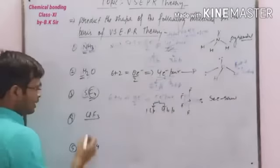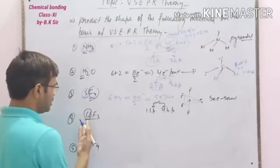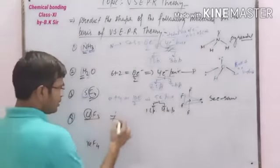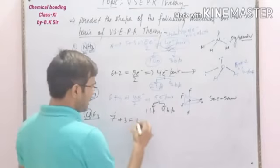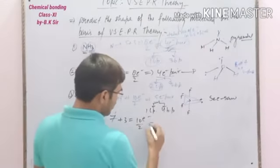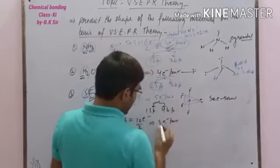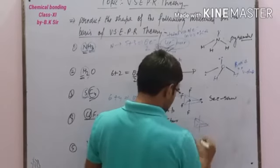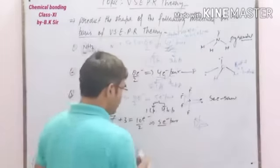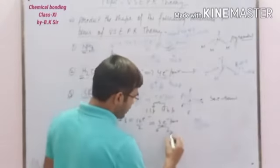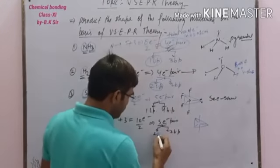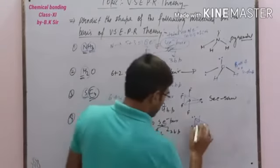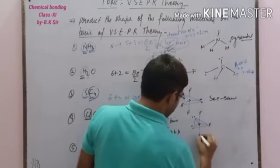The next molecule is ClF₃. In this molecule, chlorine is the central atom. In the valence shell of chlorine there are 7 electrons and 3 electrons from fluorine, so the total number of valence electrons is 10, and the number of electron pairs is 5. Due to 5 electron pairs, the geometry should be trigonal bipyramidal. But out of 5 electron pairs, there are only 3 bond pairs, so 3 bond pairs and the rest are 2 lone pairs. We place the 2 lone pairs in this geometry, and the shape of the molecule will be T-shaped.